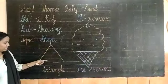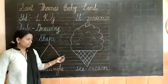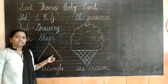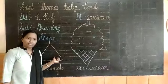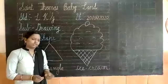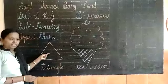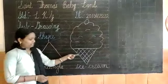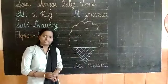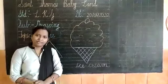This triangle and ice cream — today is our classwork and your homework also. In your notebook, first make a triangle and ice cream also. Ok children, see you soon. Bye bye.